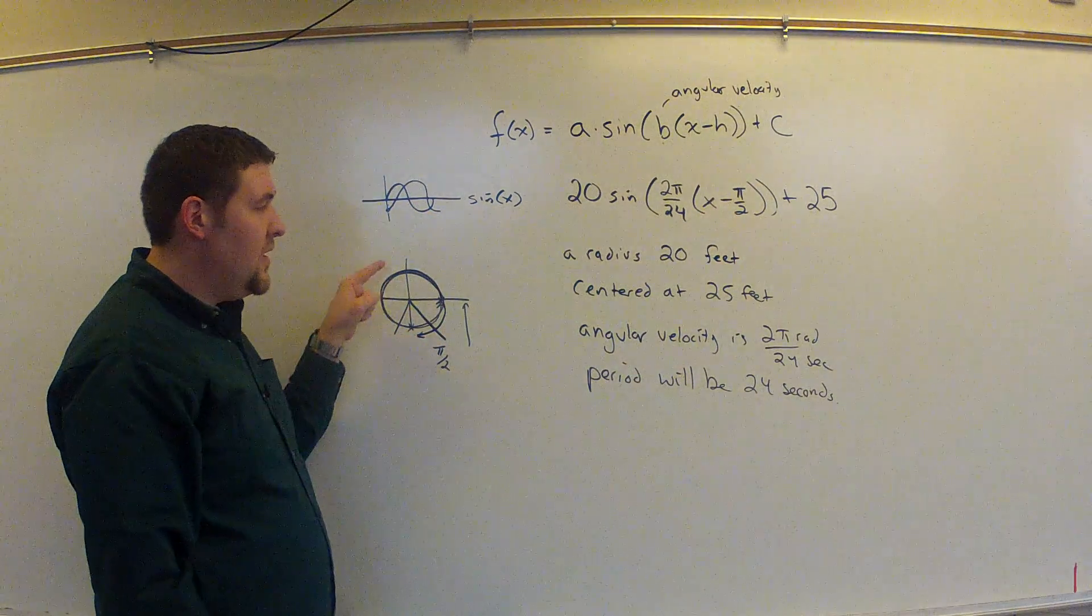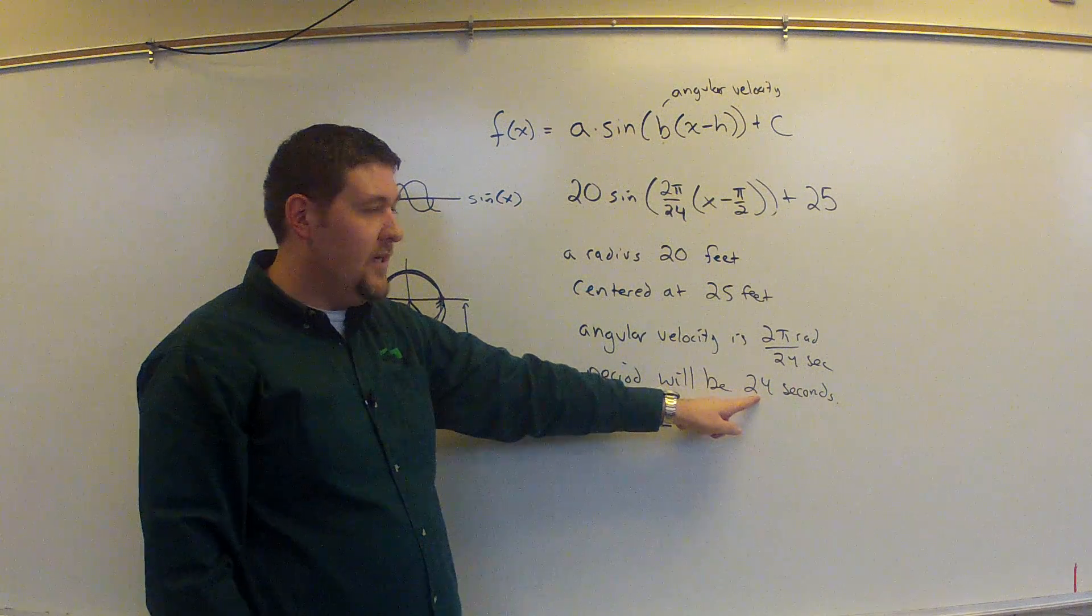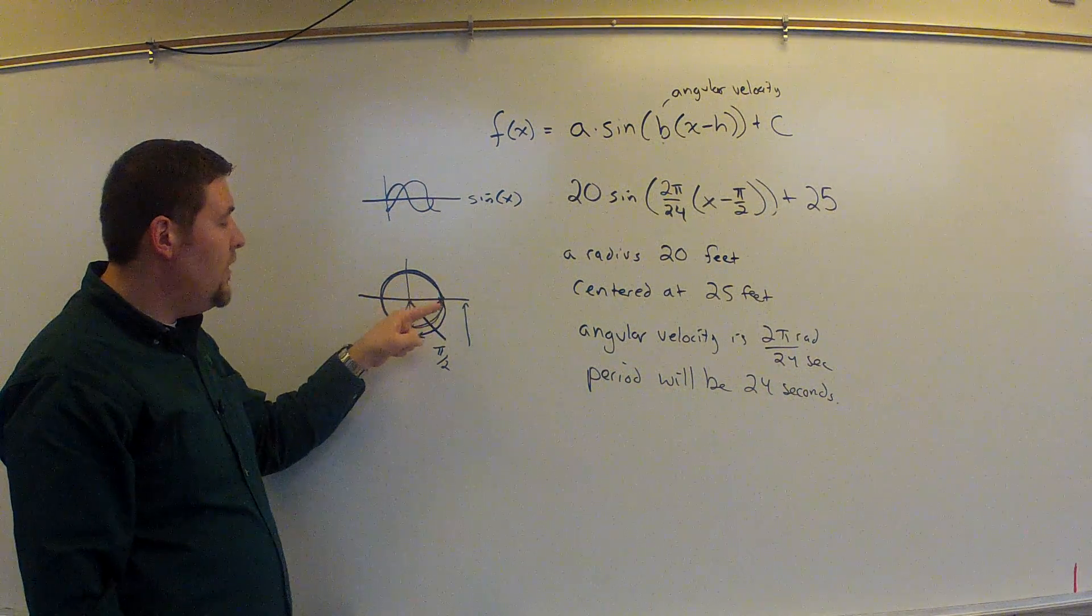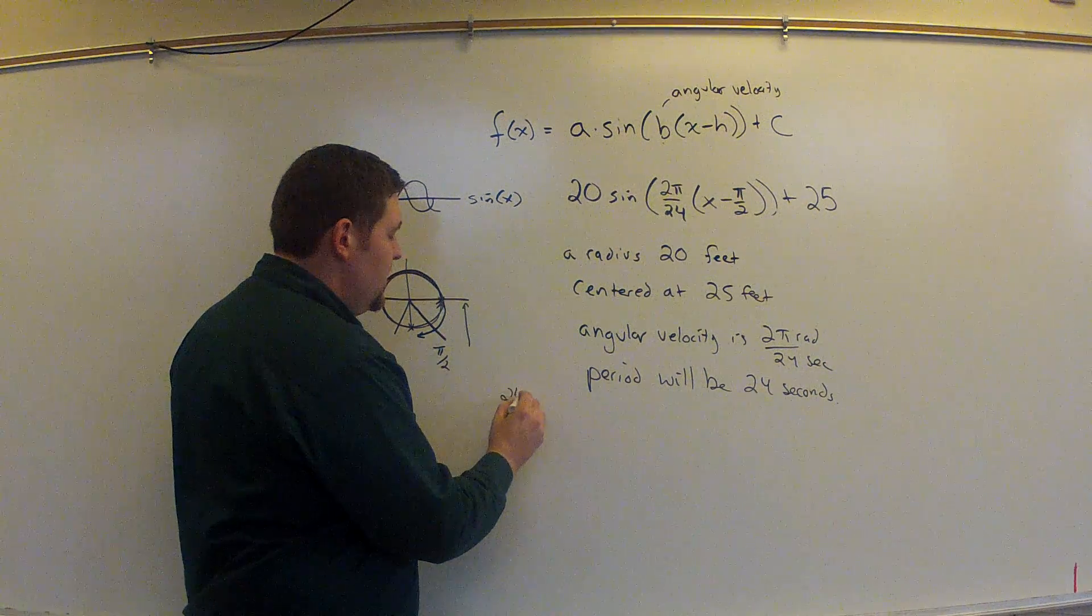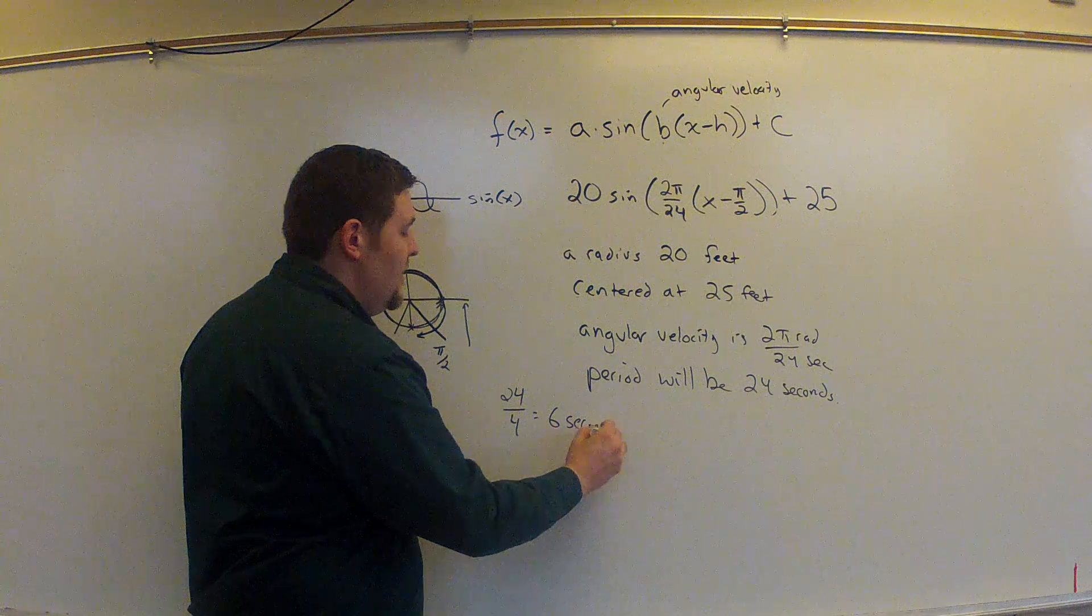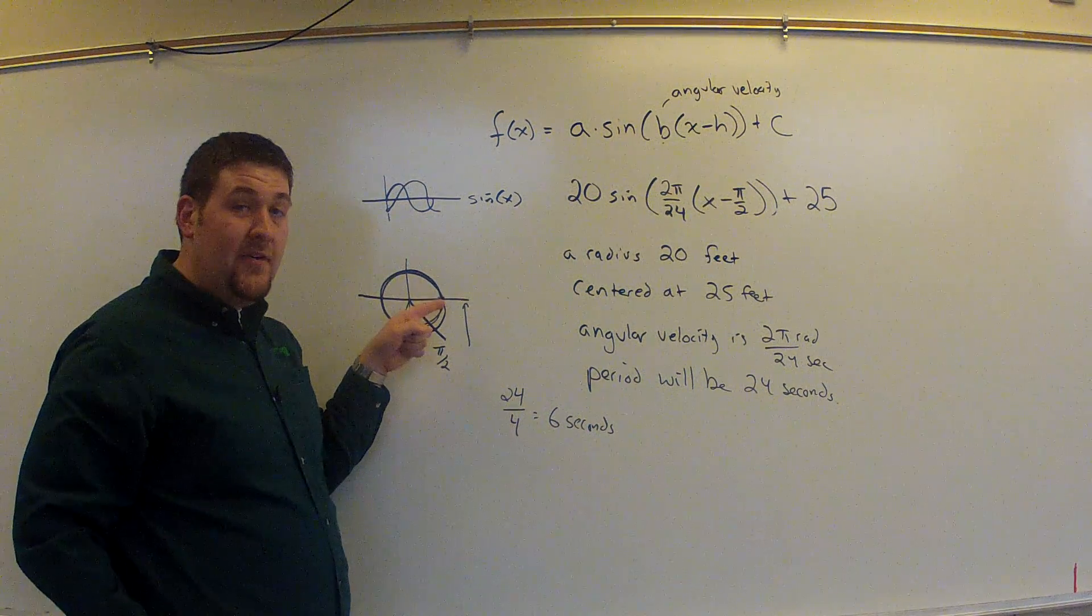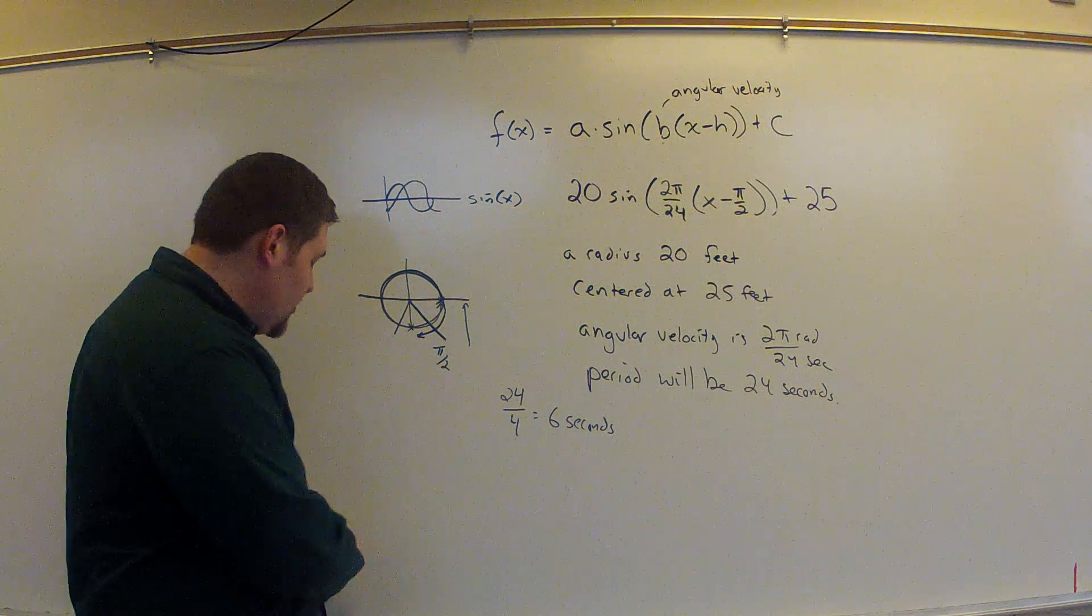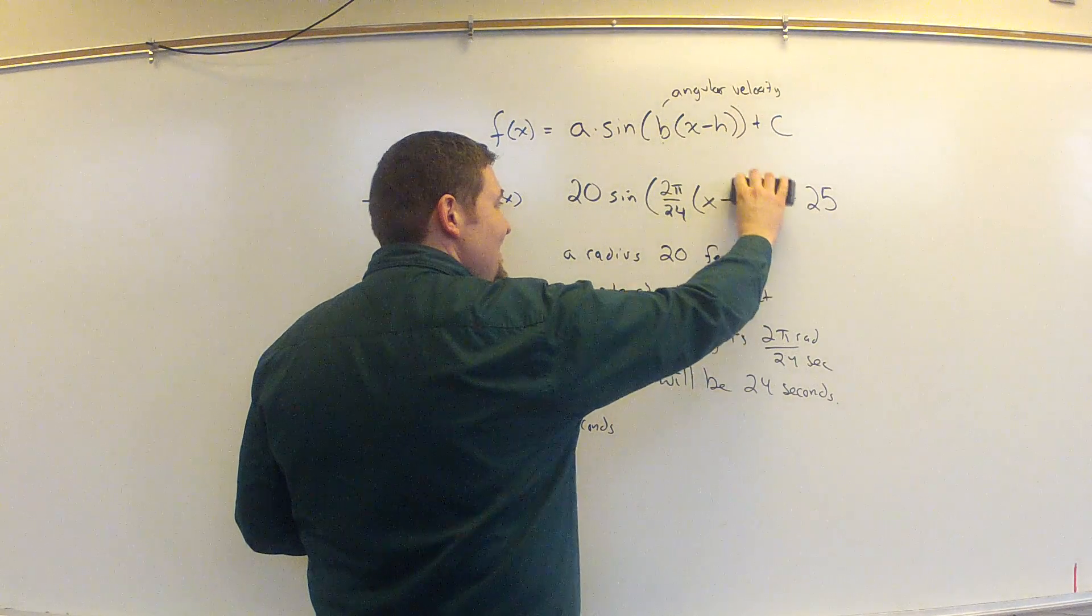This circle completes a full revolution in 24 seconds. That was our period. The 24 seconds is the full revolution. One fourth of that would read 24 divided by 4, which equals 6 seconds. So if I want to start at the bottom and not at this midway point, I could adjust my whole graph over the 6 seconds. So the correction to this would actually have to include subtracting 6 seconds.